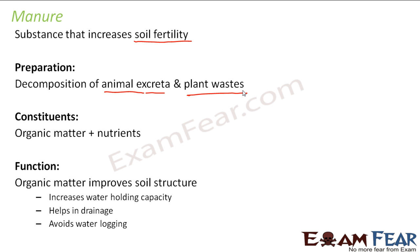What is the function of manure? The organic matter present in manure improves the structure of the soil. It increases the water holding capacity in soils. There are many different types of soils — sandy soils, clay soils, black soils. Sandy soil is loose and does not hold a lot of water. When manure is applied to a sandy soil, it increases the water holding capacity of sandy soils. It also helps in drainage and avoids water logging in clay soils.